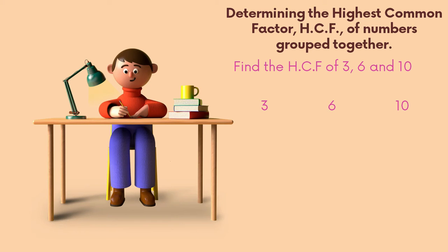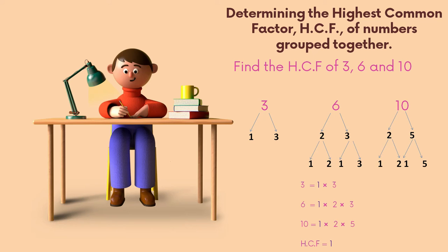Determining the highest common factor (HCF) of numbers grouped together. Find the HCF of three, six, and ten. The factors of three are one and three; of six, two and three; of ten, two and five — all prime numbers. So: three equals one times three; six equals one times two times three; ten equals one times two times five. The number common to all three is one, so the HCF of three, six, and ten is one.